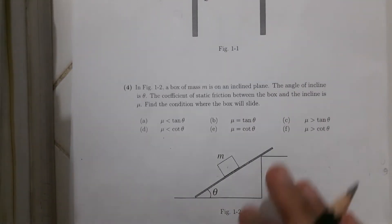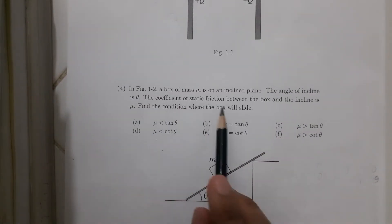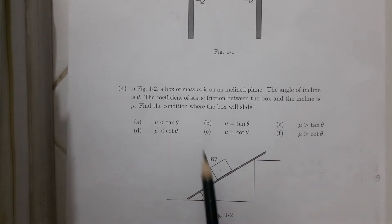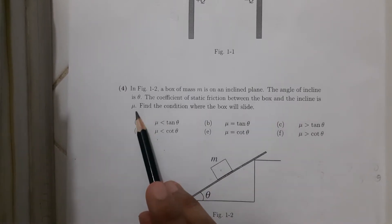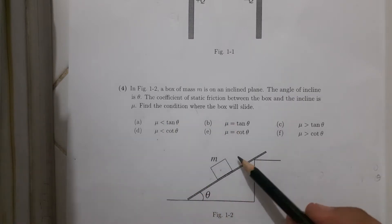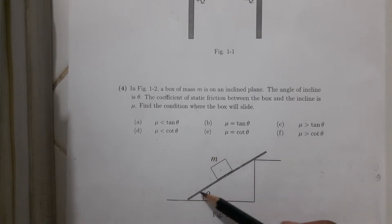Option number 4. In this figure, a box of mass M in an inclined plane. The angle of incline is theta. The coefficient of static friction between the box and the inclined is mu. Find the condition where the box will slide. First, if we are discussing and trying to answer this question, we need to draw the free body diagram.